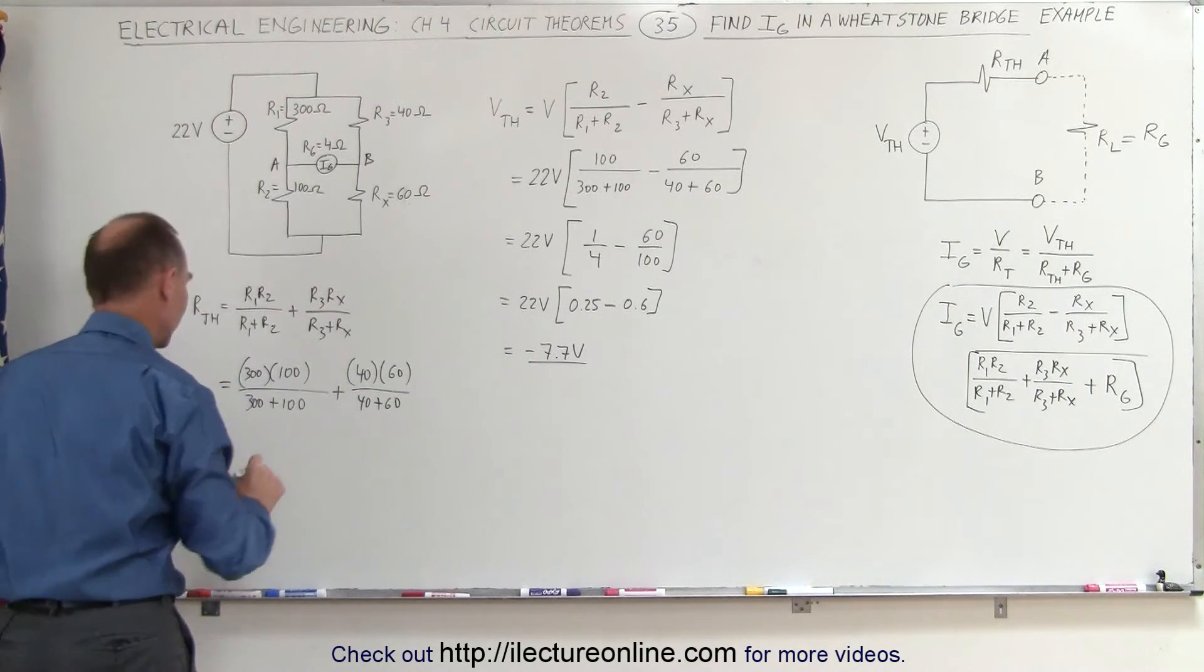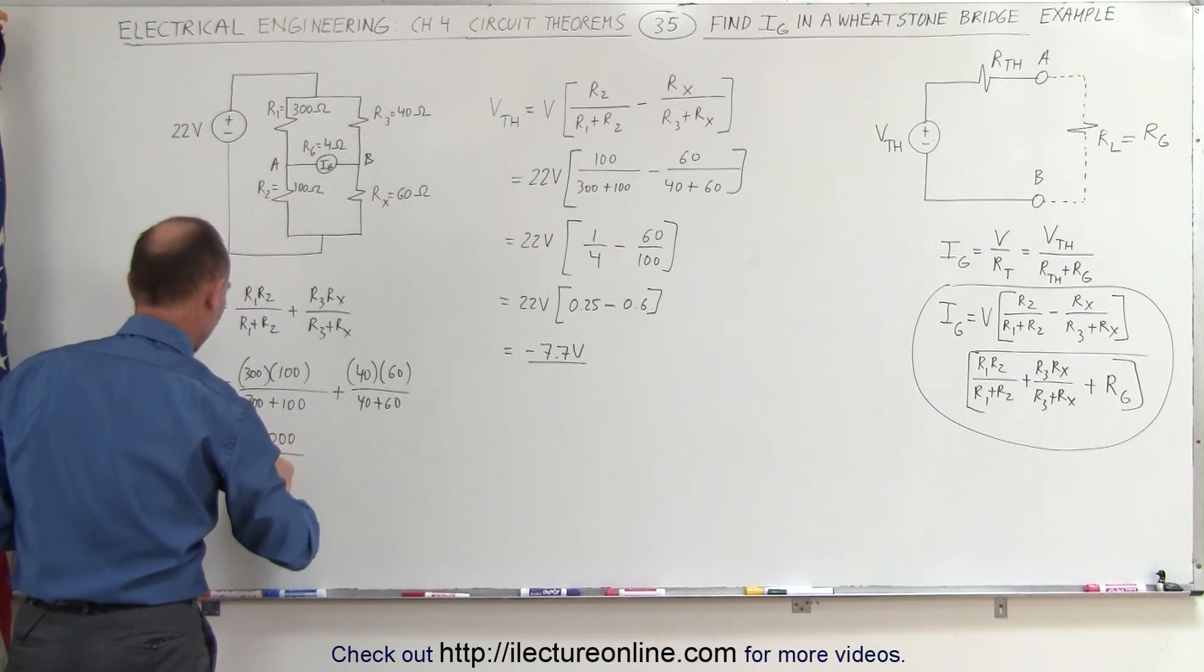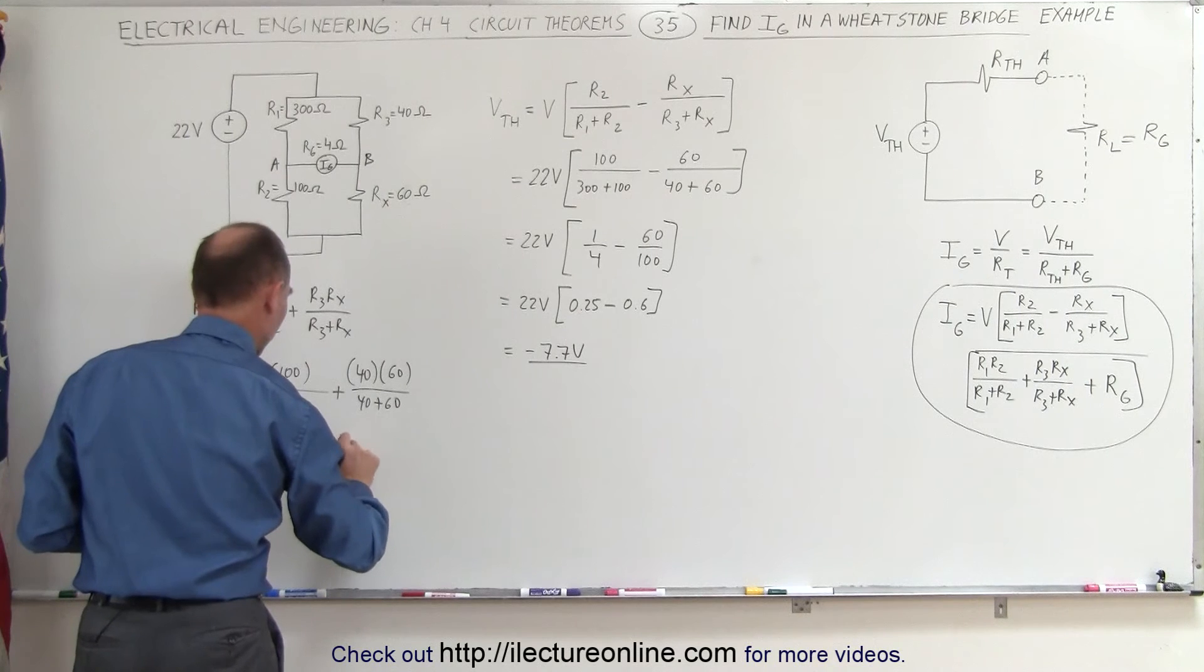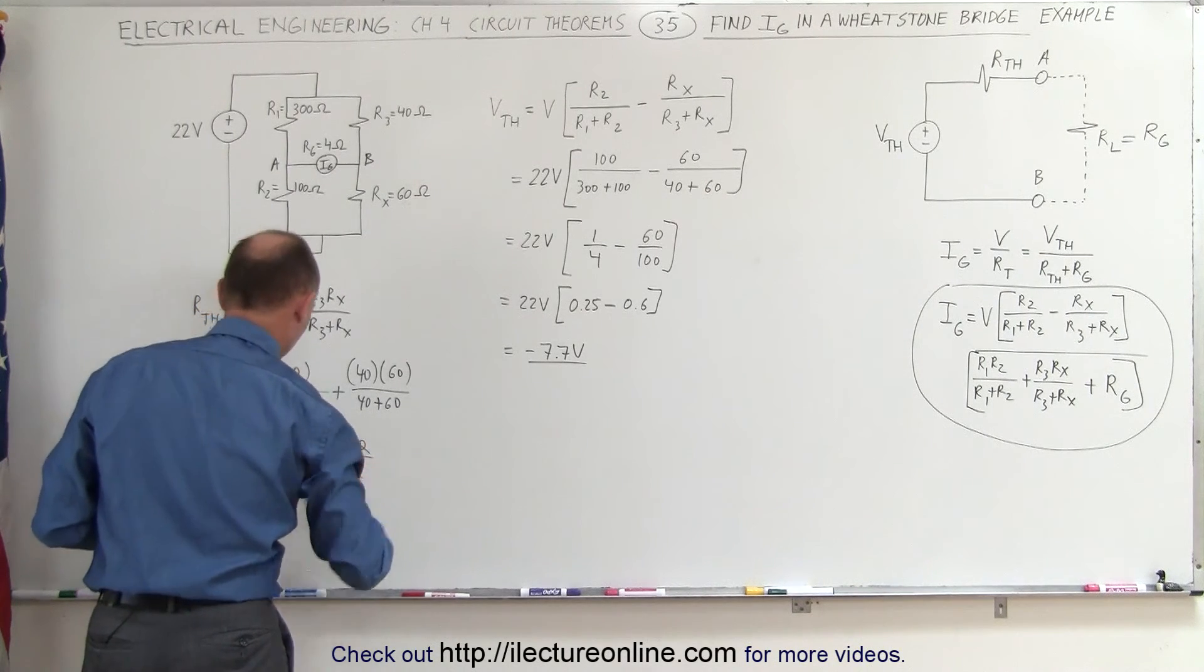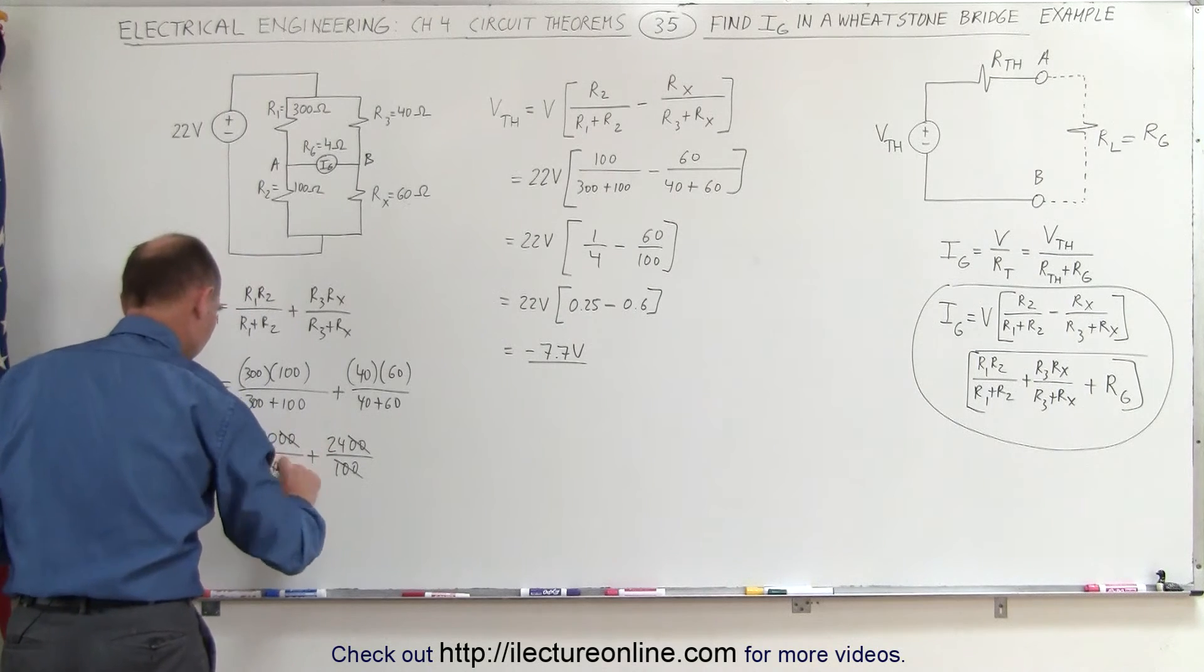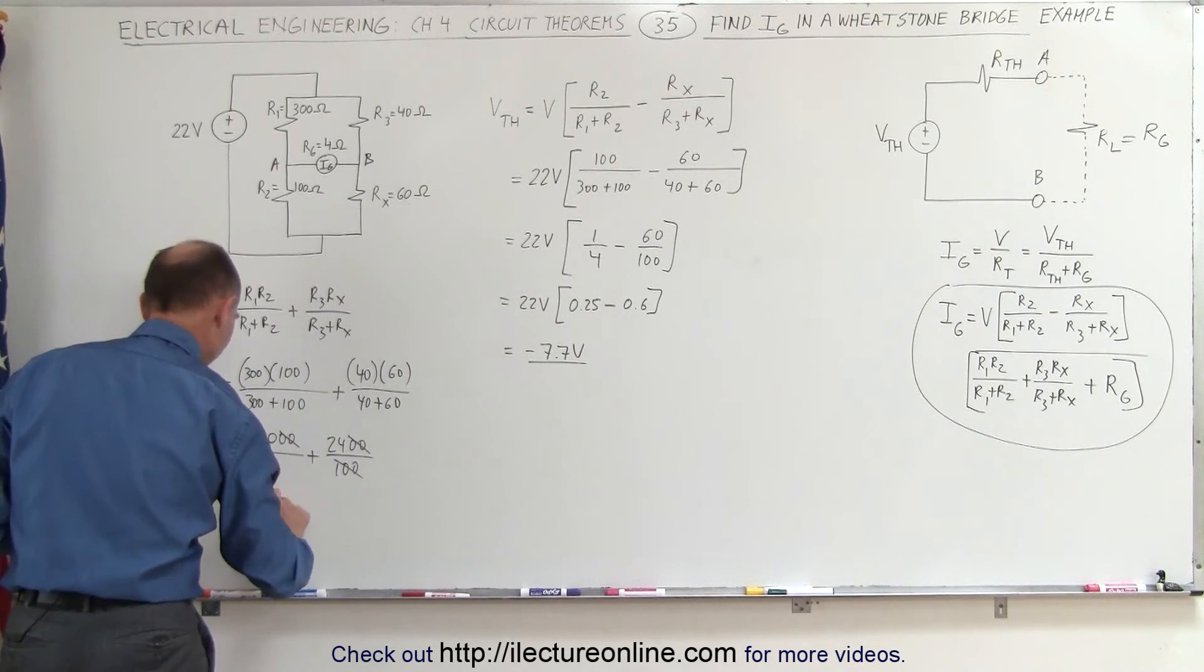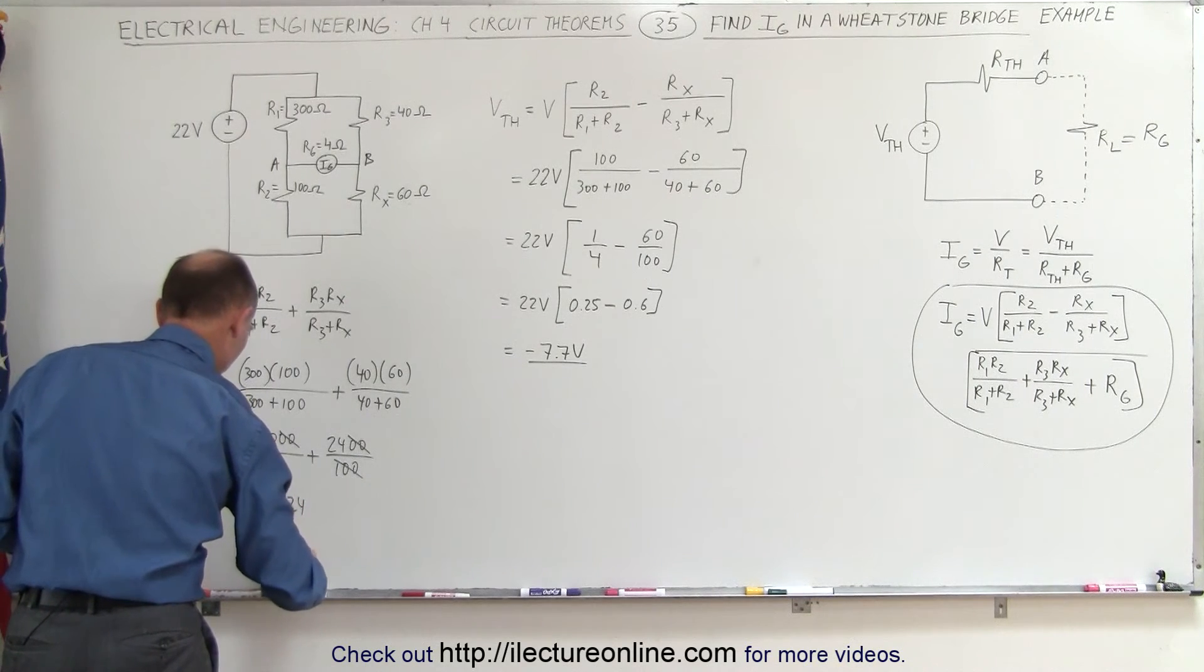Let's see if we can simplify that. That's a 3 with 4 zeros divided by 400, plus that's a 24 with 2 zeros divided by 100. So this cancels out easily, and here we can take those two away. This will leave us 300 divided by 4, which is 75, plus 24, which is equal to 99 ohms.